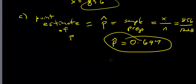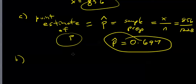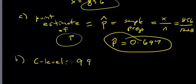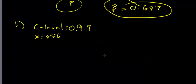This p-hat is our best point estimate of p, but we've got a better way — we can create interval estimates. Maybe p-hat is a good estimate of p, maybe not, and maybe an interval estimate creating a range of values to hopefully contain p is a better way. Part B asks us to construct a 99% confidence interval estimate of the proportion of medical malpractice lawsuits that are dropped or dismissed. So our confidence level is 0.99, and the other information still holds: 856 lawsuits dropped or dismissed out of 1228 randomly selected.